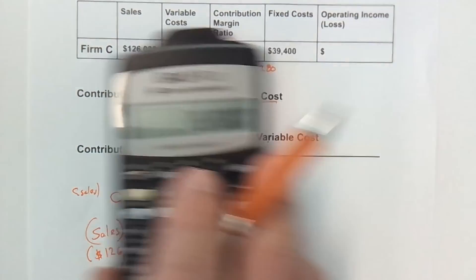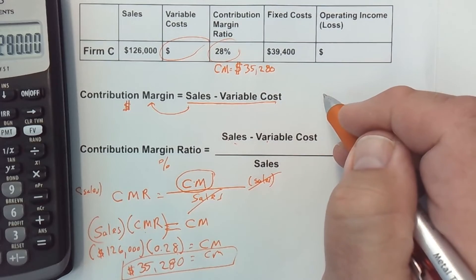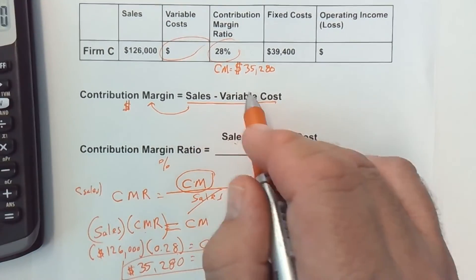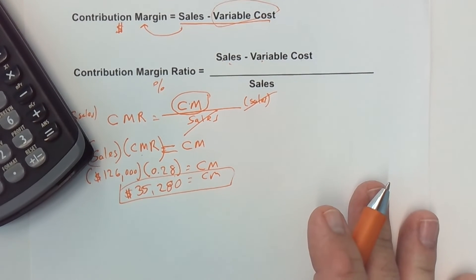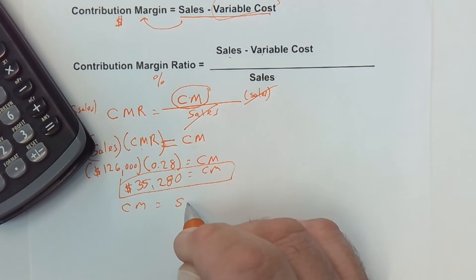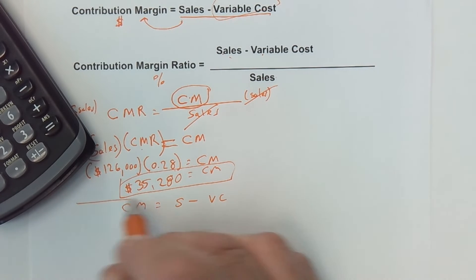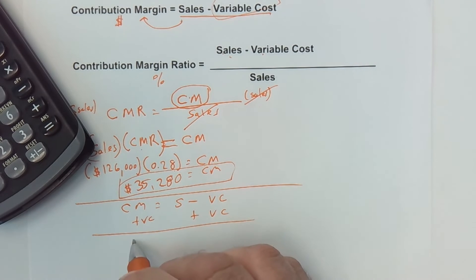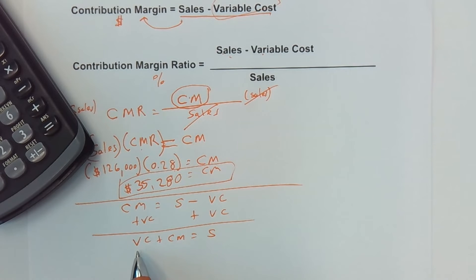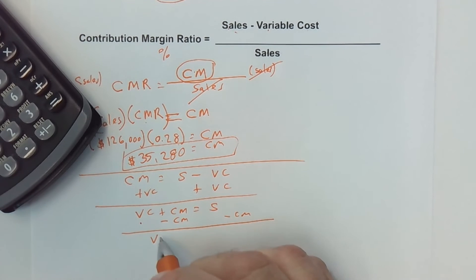Now we're still trying to find variable costs. We know contribution margin equals sales minus variable costs. Rearranging algebraically: add variable costs to both sides, giving variable costs plus contribution margin equals sales. Then subtract contribution margin from both sides, and we get: variable costs equals sales minus contribution margin.